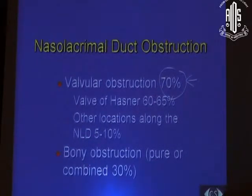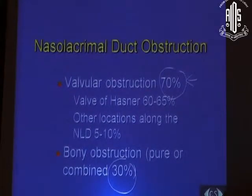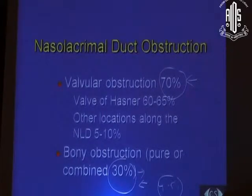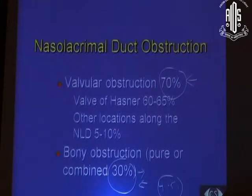Although a majority of patients have valvular obstruction, there is a subset with non-valvular or bony obstruction. Bony obstruction can be complete or partial, and those are the patients who do not resolve with conservative therapy or even probing and need DCR. It is not as high as 30% that would need DCR — only about 4-5% — because there are two categories: relative bony obstruction, amenable to probing done in a particular way, and absolute bony obstruction, which would ultimately need dacryocystorhinostomy.